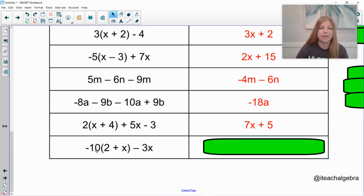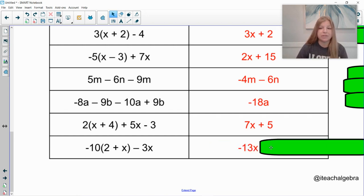And the last one. Negative 10 times 2 is negative 20. Negative 10 times x is negative 10x. What's negative 10x minus 3x? Well, negative 10 minus 3 is negative 13. So that would leave me with negative 13x. And then the negative 10 times 2 left me with that negative 20.